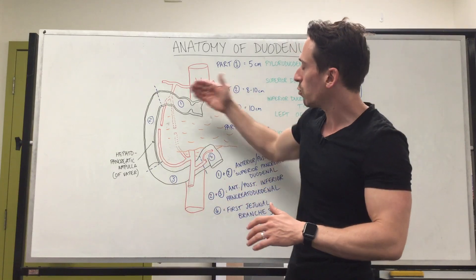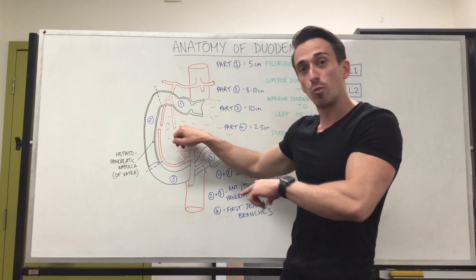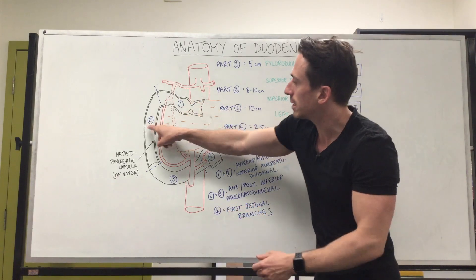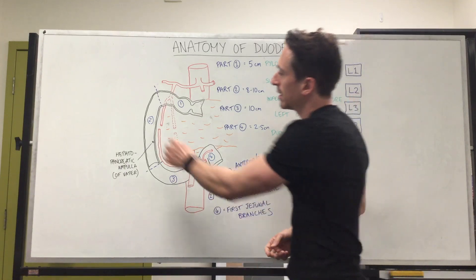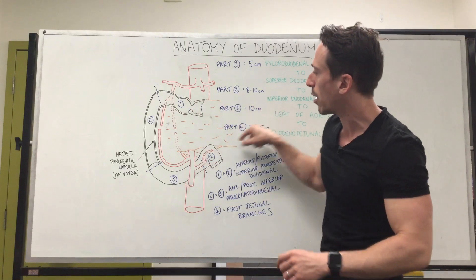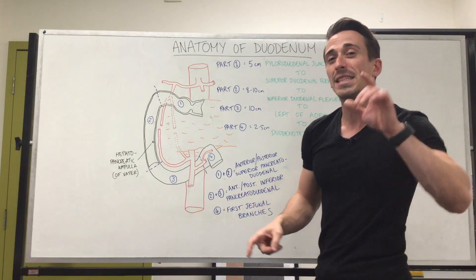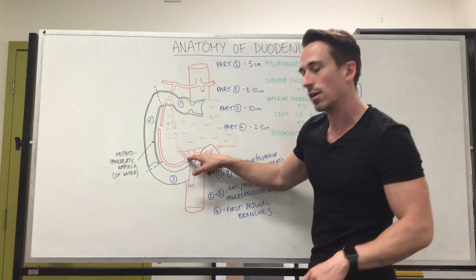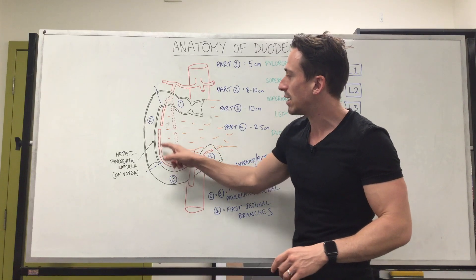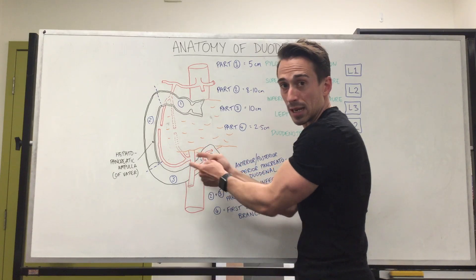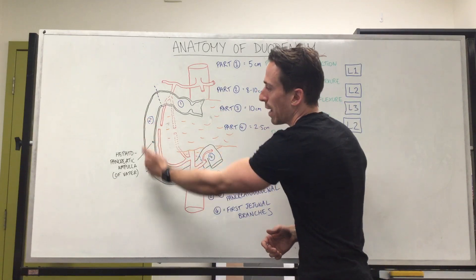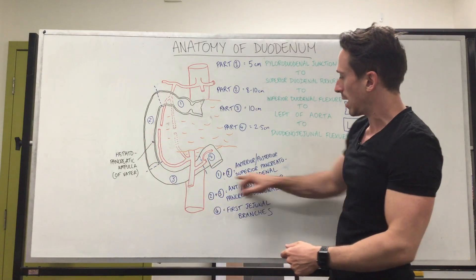The anterior and posterior superior pancreatoduodenal arteries supply blood — oxygen and nutrients — to the first and second portions of the duodenum. Now, what feeds the second, third, and fourth portions? Lower down the aorta, there's another branch called the superior mesenteric artery. One of its branches is the inferior pancreatoduodenal artery, which has an anterior and a posterior segment, and these supply the second and third parts of the duodenum.